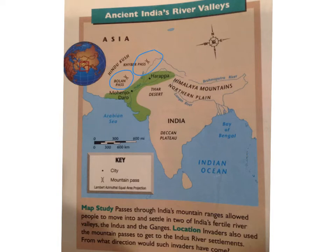The earliest people of northern India probably entered the valley of the Indus River through these pathways. Great rivers rise in the mountains, fed by melting snows and rain. The Indus and Ganges rivers cut through the mountains and flow across the plains of northern India, making farming possible in the river valleys.